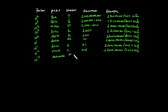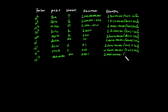The next prefix is Milli. Its decimal value is 0.001. 1 millimeter is equal to 1 times 10 to the power of minus 3 meters.